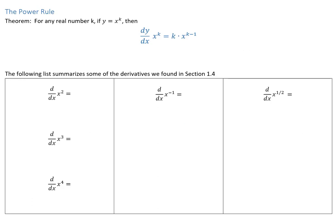Now that we've got our notation down, let's go over the power rule. If you have x to a power k and you're differentiating with respect to x, then that k comes down as a coefficient, and we say k times x to the power of k minus 1. We're going to pull that power down in front and then reduce the power by 1.